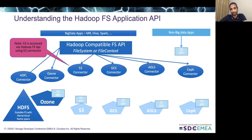HDFS is the default implementation of this API in the Hadoop project, and it's a distributed file system. HDFS is highly used in multiple companies today. Most of the cloud providers — like Amazon AWS, Google Cloud Storage, Azure Data Lake Storage — provide their own implementation of this API. Similarly, other storage systems also provide their own implementations of this API.